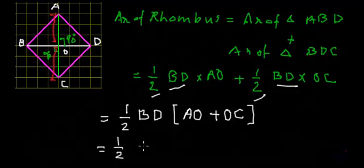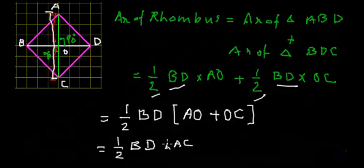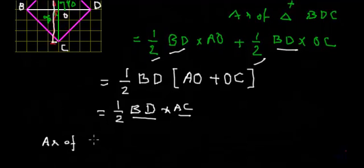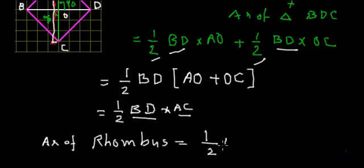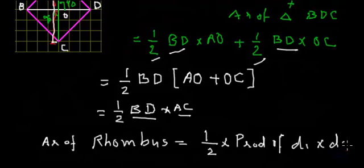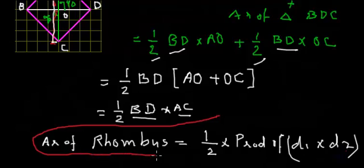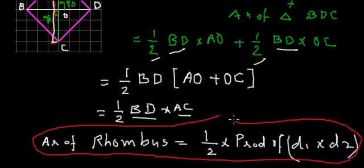AO plus OC is the complete length from point A to point C, which is diagonal AC. So the area of the rhombus equals ½ × BD × AC, where AC and BD are the two diagonals. The formula for the area of a rhombus is: Area = ½ × D1 × D2 — half the product of both diagonals.